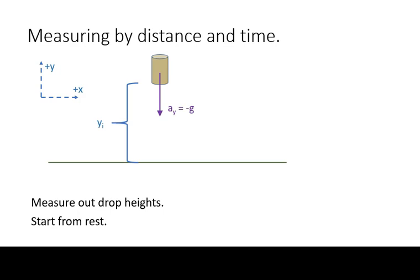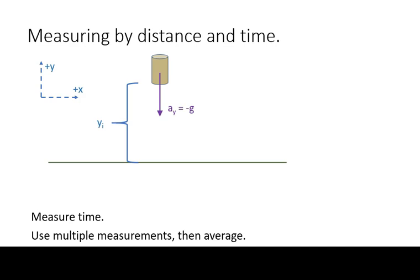In this experiment you are going to measure out standard heights from the floor. Then, you are going to take a given object, hold its bottom at the measured height, and then drop it. You need to measure the time from the start of the drop to when the object hits the floor. You need to make multiple measurements and then average the result.